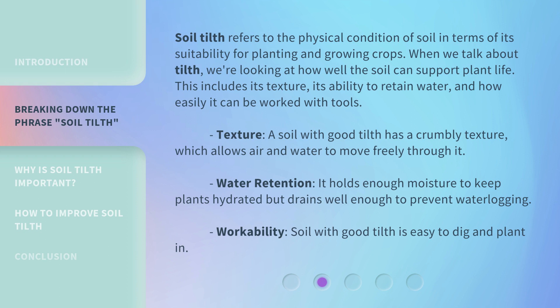This includes its texture, its ability to retain water, and how easily it can be worked with tools. A soil with good tilth has a crumbly texture, which allows air and water to move freely through it. It holds enough moisture to keep plants hydrated but drains well enough to prevent waterlogging. Soil with good tilth is also easy to dig and plant in.